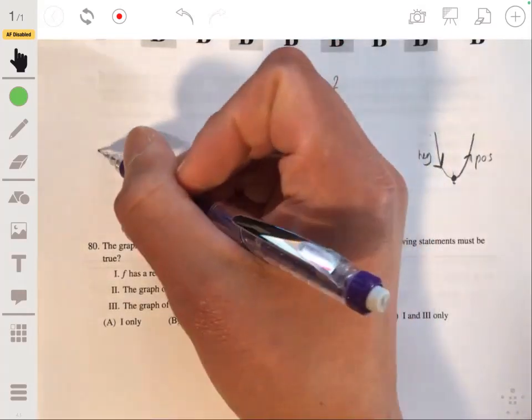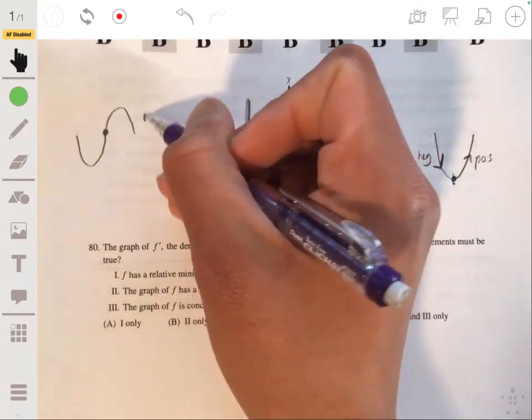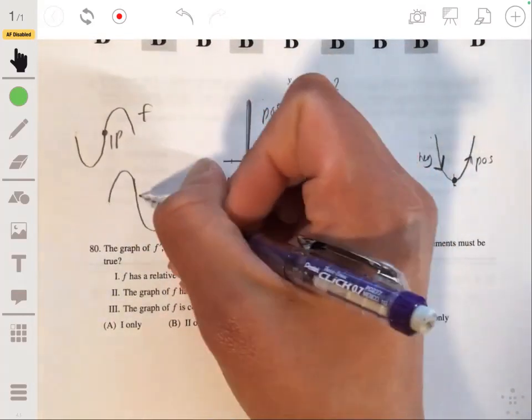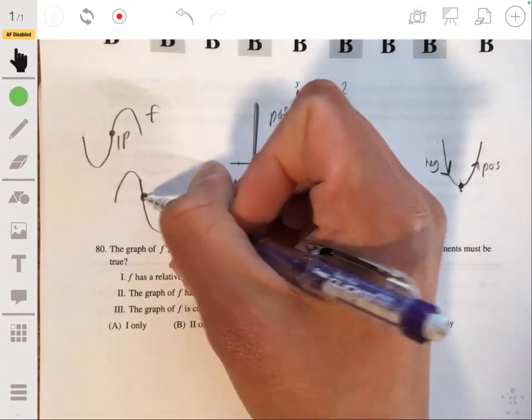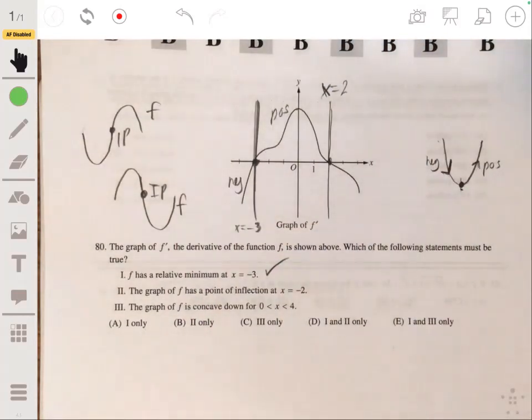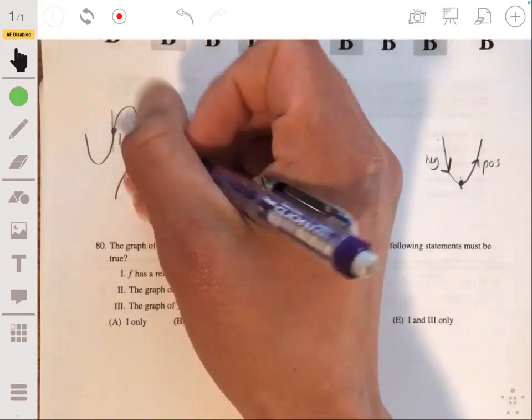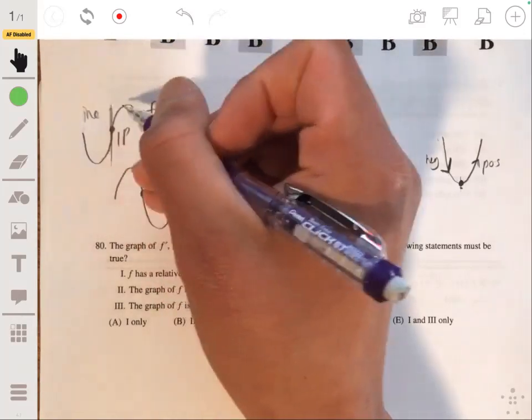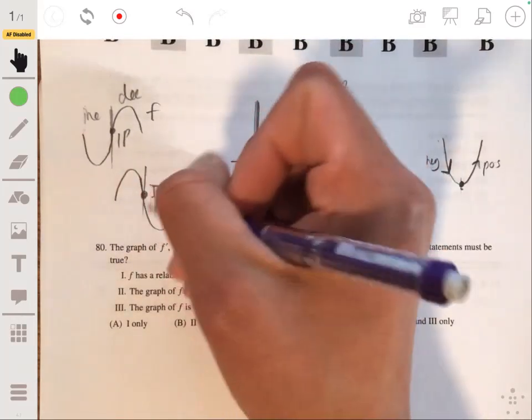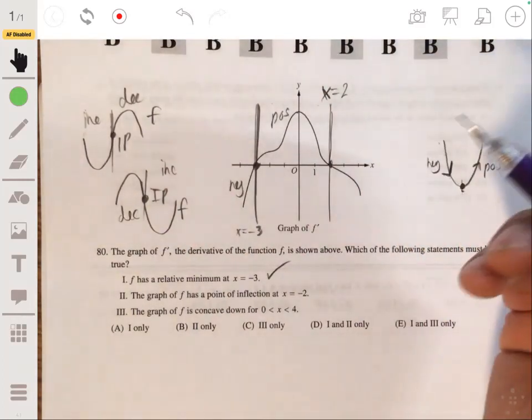So remember that a point of inflection occurs when a graph goes from concave up to concave down, this would be like an inflection point, or from concave down to concave up. So the graph of f would have like an inflection point right about here. Now in terms of the derivative, like what does that mean? Well, the derivative changes from increasing to decreasing, so increasing to decreasing in this case, or from decreasing to increasing. So it changes its behavior. It doesn't change its sign, it changes its behavior.